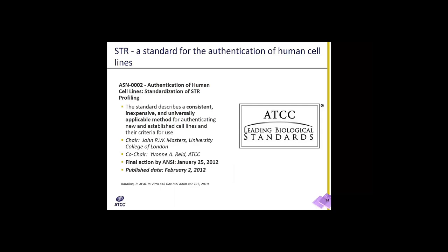In 2012, we published a consensus standard, ASN0002, on the authentication of human cell lines and standardization of STR profiling. This written standard ensures a consistent, inexpensive, and universally applicable method for authenticating human cell lines. This method is used widely by many testing services, and the working group was made up of internationally known experts within the field of STR profiling.